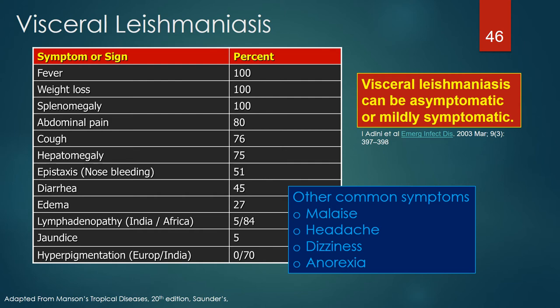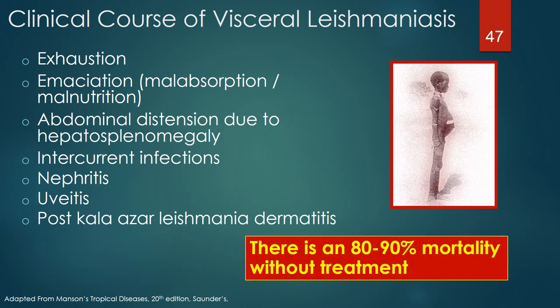Healing is often associated with the development of tuberculoid granulomas of the liver. The clinical course of symptomatic patients often includes exhaustion, emaciation, infection due to malabsorption and malnutrition, abdominal distention due to hepatosplenomegaly, and intercurrent infections. Visceral leishmaniasis can also cause nephritis, uveitis, and post-kala azar leishmania dermatitis. There is an 80–90% mortality without treatment.